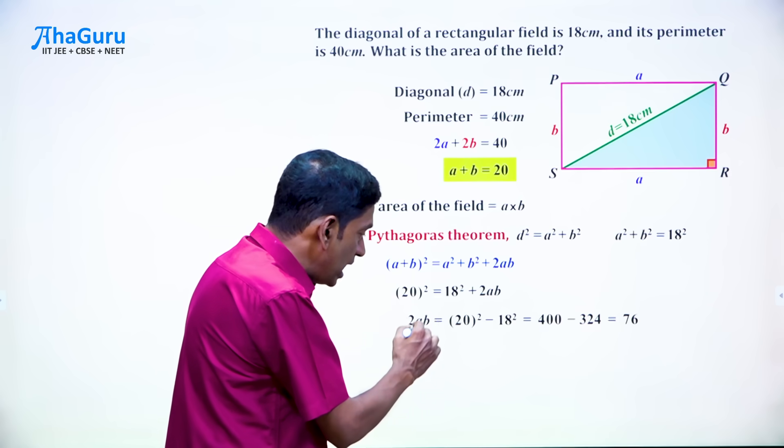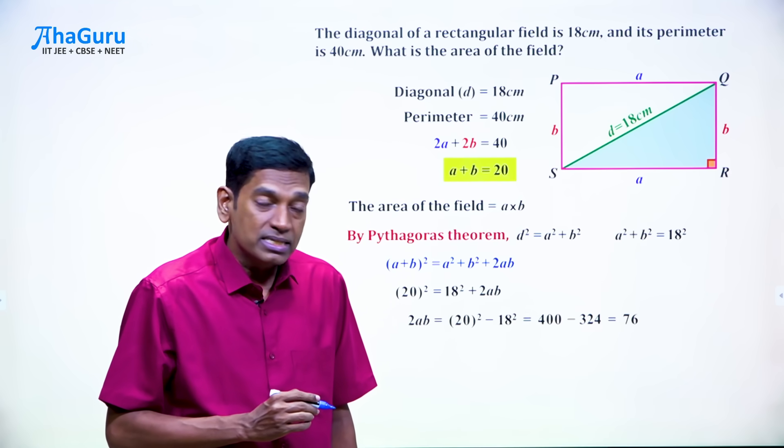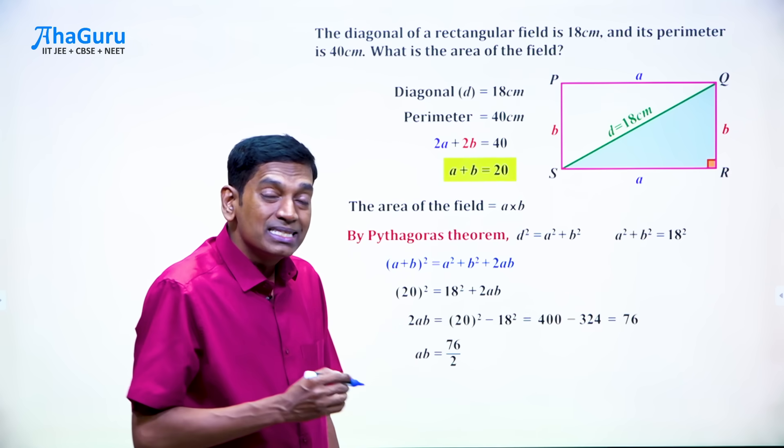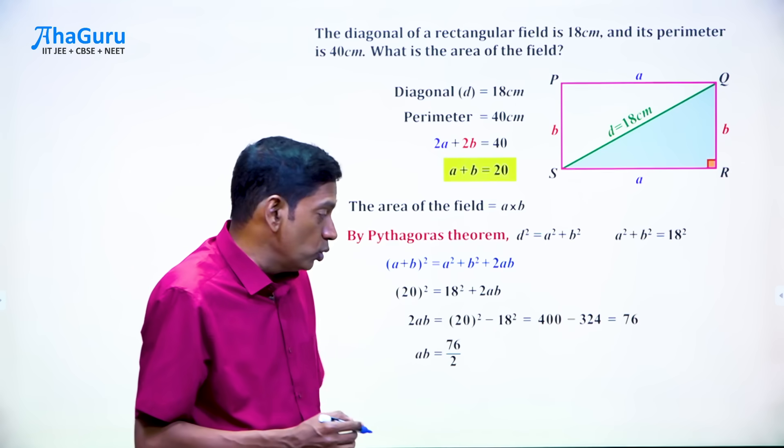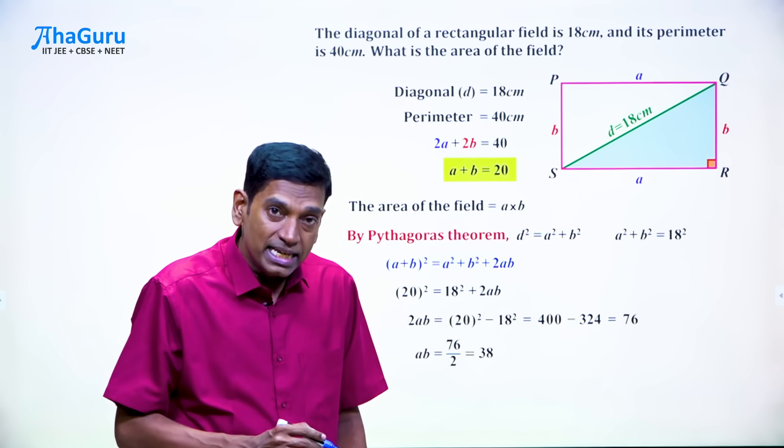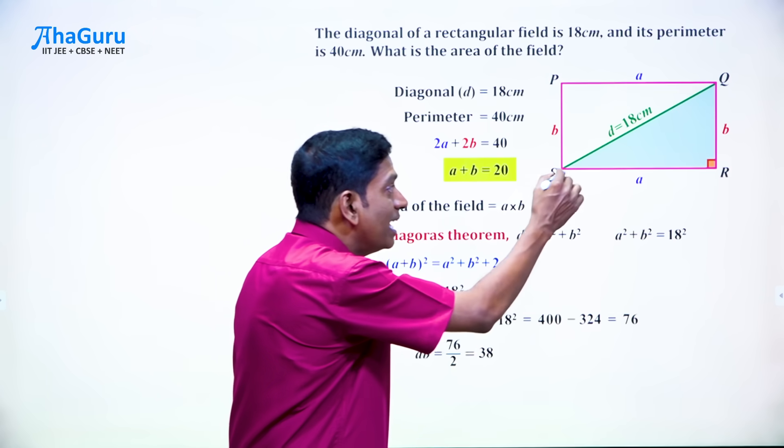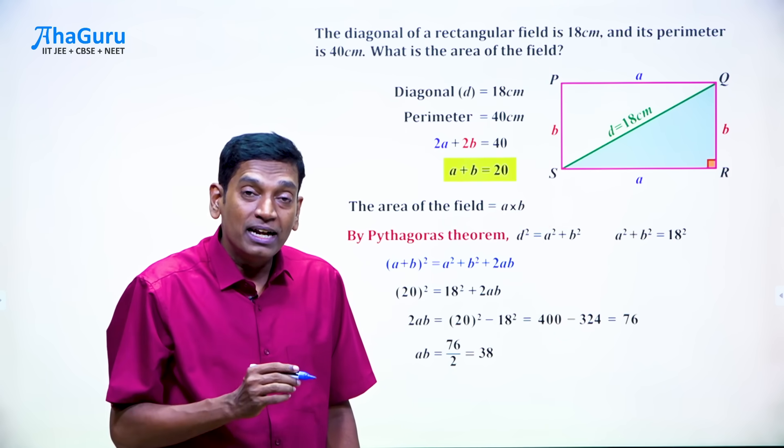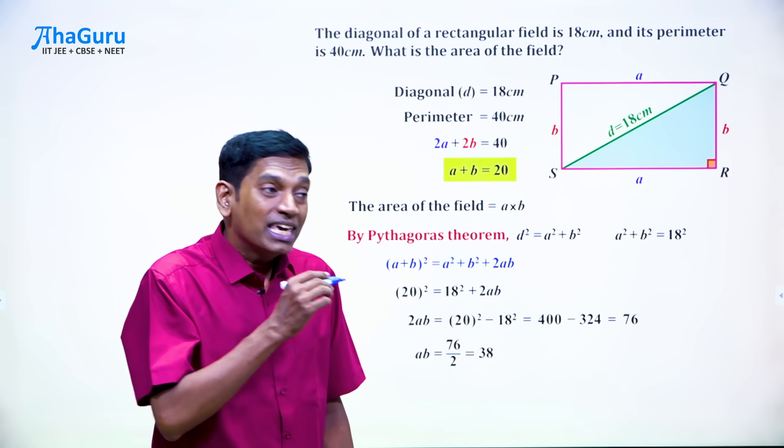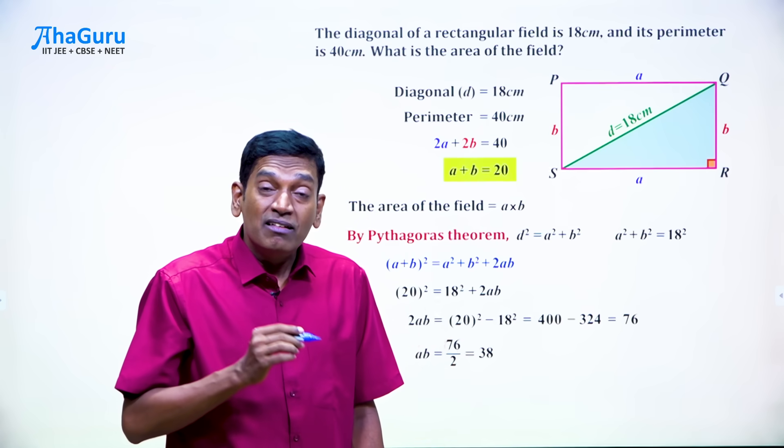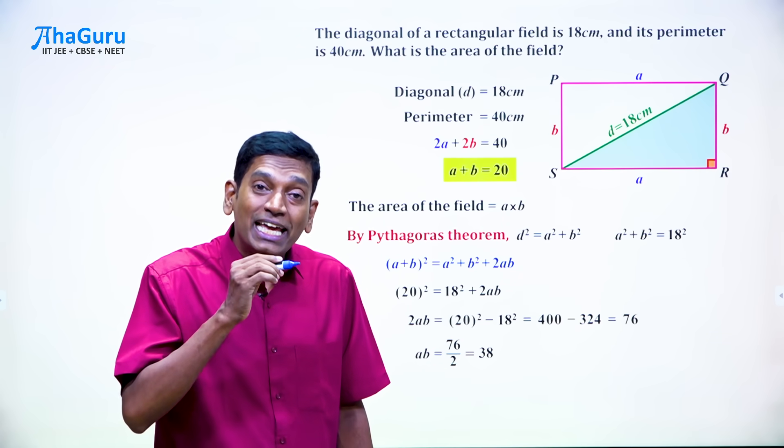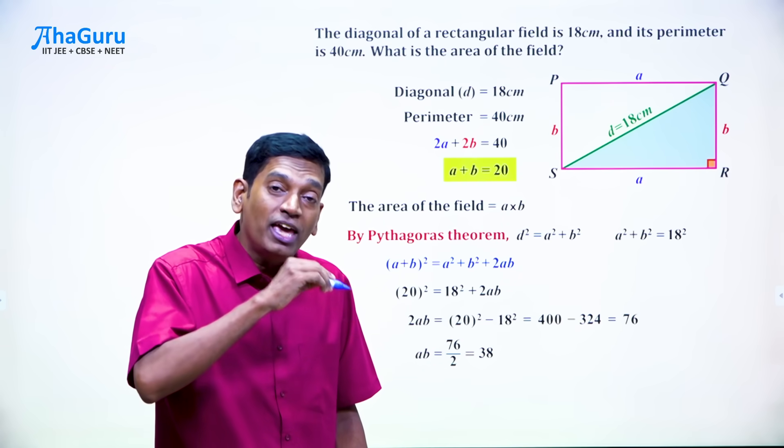So we have 2AB is 76 which means AB is 76 by 2 which is 38. Remember, AB is what we wanted because that is the area of the field and the beauty is we calculated AB without solving for the individual values of A or B.